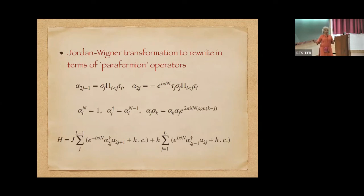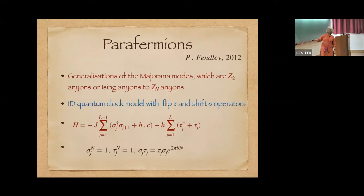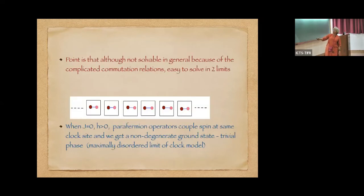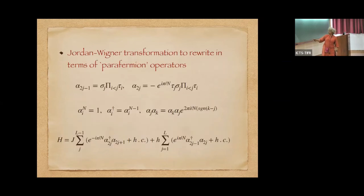It generalizes Z to n, n-spin. And like you can rewrite the Ising model in terms of Majorana fermions, you can do a Jordan-Wigner transformation to rewrite the clock model in terms of parafermion operators. And the clock model rewritten in terms of parafermion operators, the parafermion operators have a commutation relation where under an exchange, they get something of the form e raised to 2πi/n times (k-j). This is the generalization of what you would get for Majorana fermions.